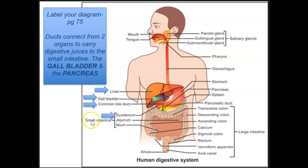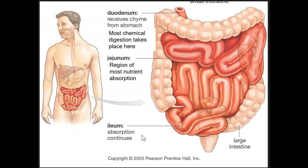The fourth thing to label would be that part of the small intestine that the line is pointing to, and that would be the duodenum. Then we have the stomach, the pancreatic duct, which leads to the pancreas — that's where the pancreatic enzymes are secreted from. And finally we have the pancreas.